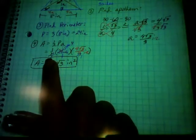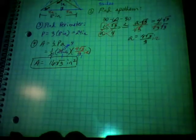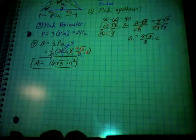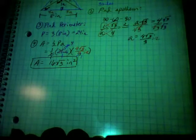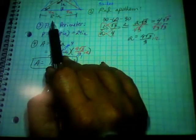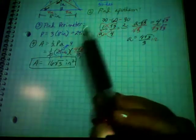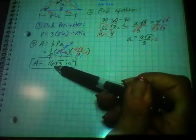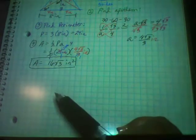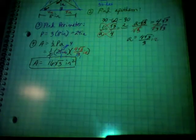Cross-checking with the equilateral triangle formula (s²√3)/4: 8² × √3 / 4 = 64√3/4 = 16√3. Both methods give the same answer. The formula is clearly much easier — do you appreciate it now?